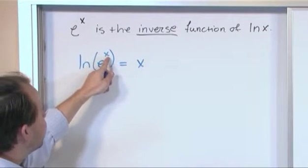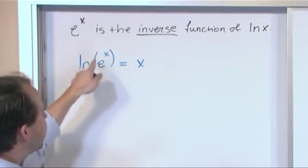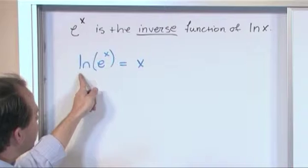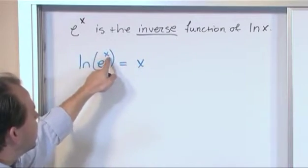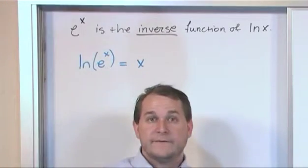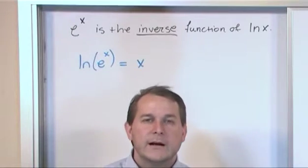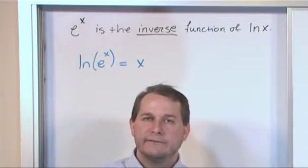It works for whatever number you put in there. You put 1500 in for x, e to the 1500 power, you're going to get a big number. You take the natural log of the answer that you get, and you're going to get back the large number, the 1500 that you started with, right? And that works for everything because they're inverses of one another.